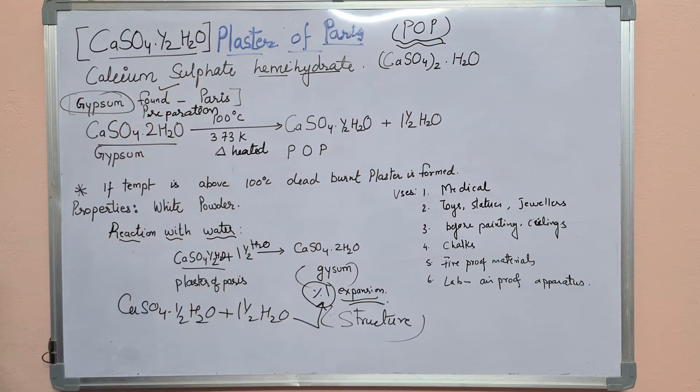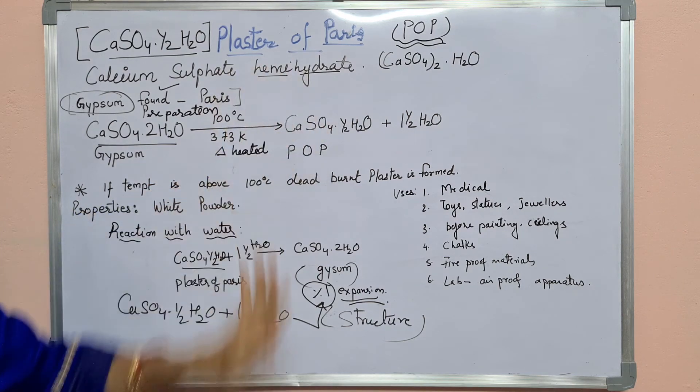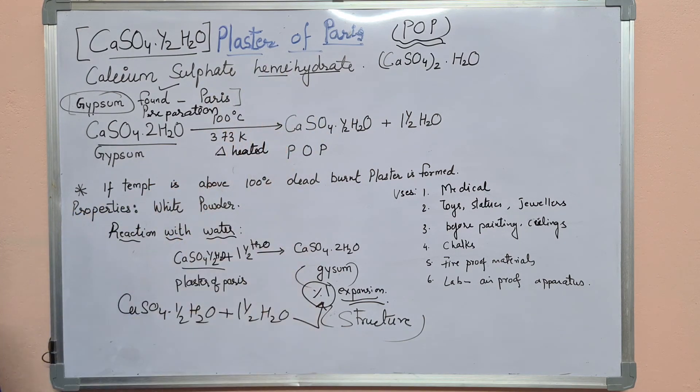So remember, Plaster of Paris is CaSO4·½H2O, that is calcium sulfate hemihydrate.